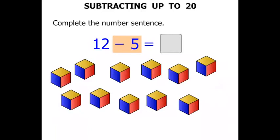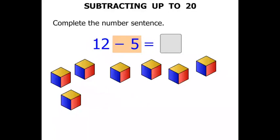1, 2, 3, 4, 5. 5 have disappeared. So what are we left with? 1, 2, 3, 4, 5, 6, 7. Our answer equals 7.